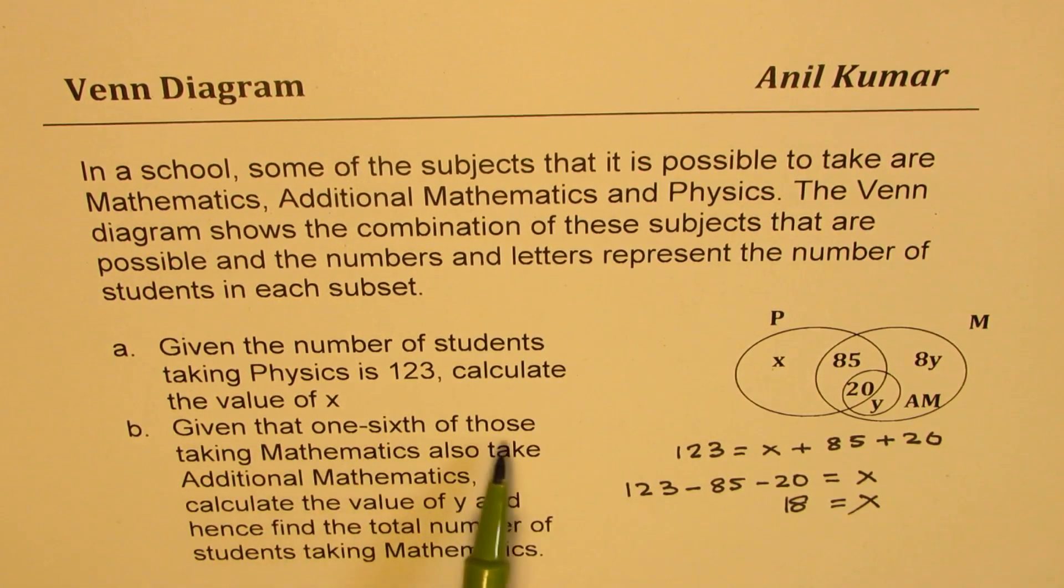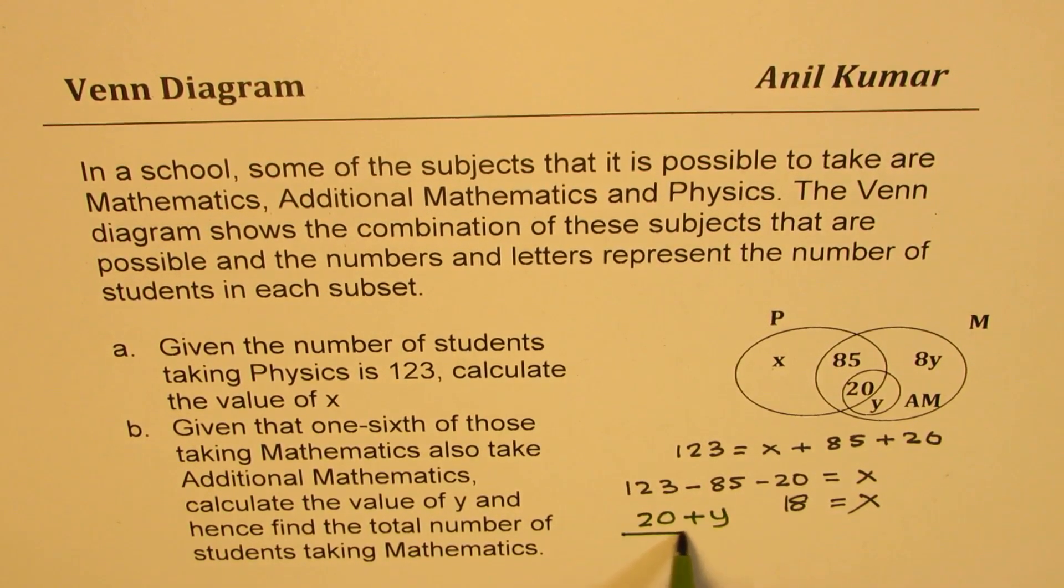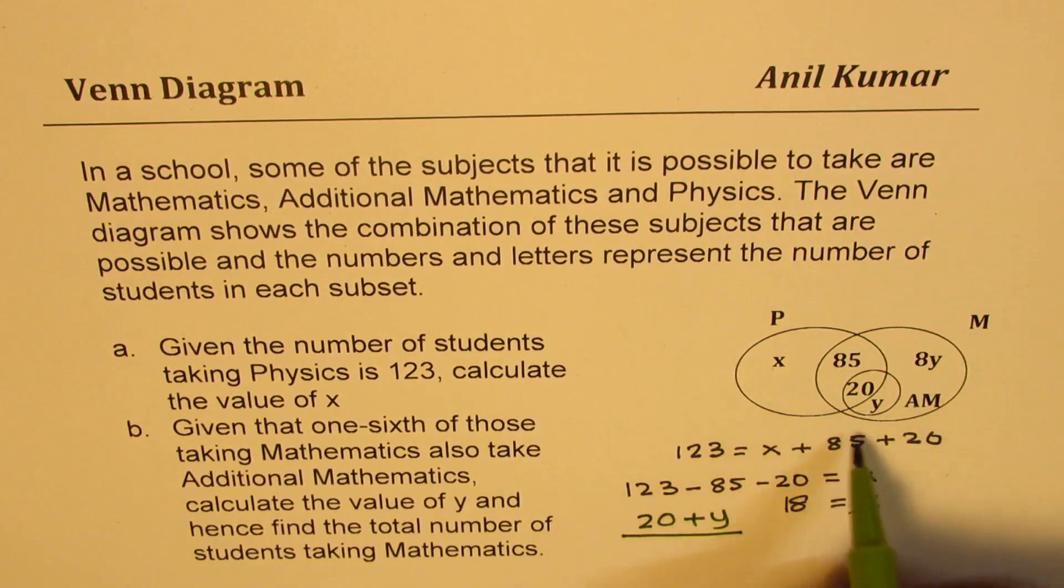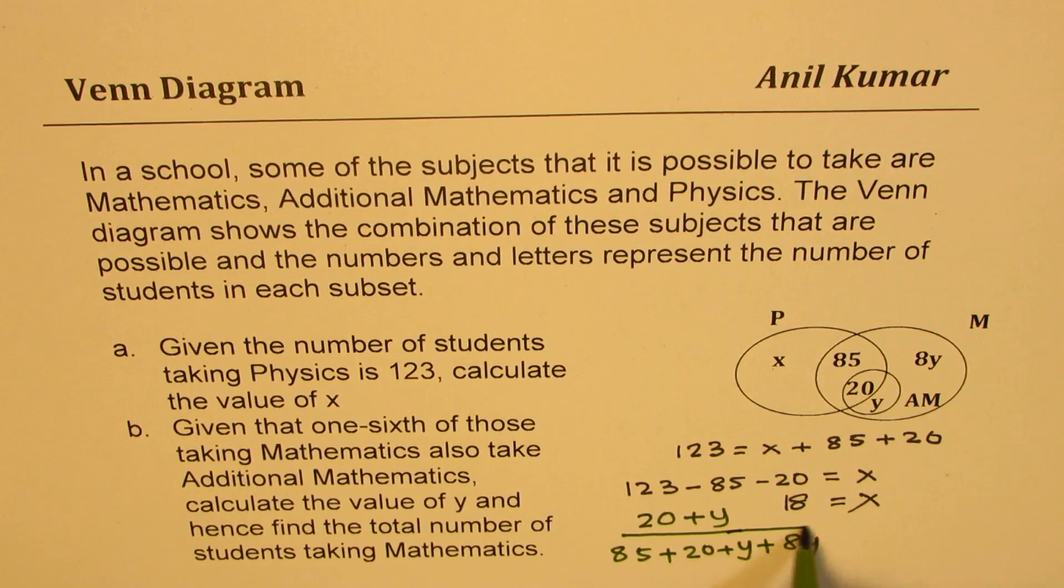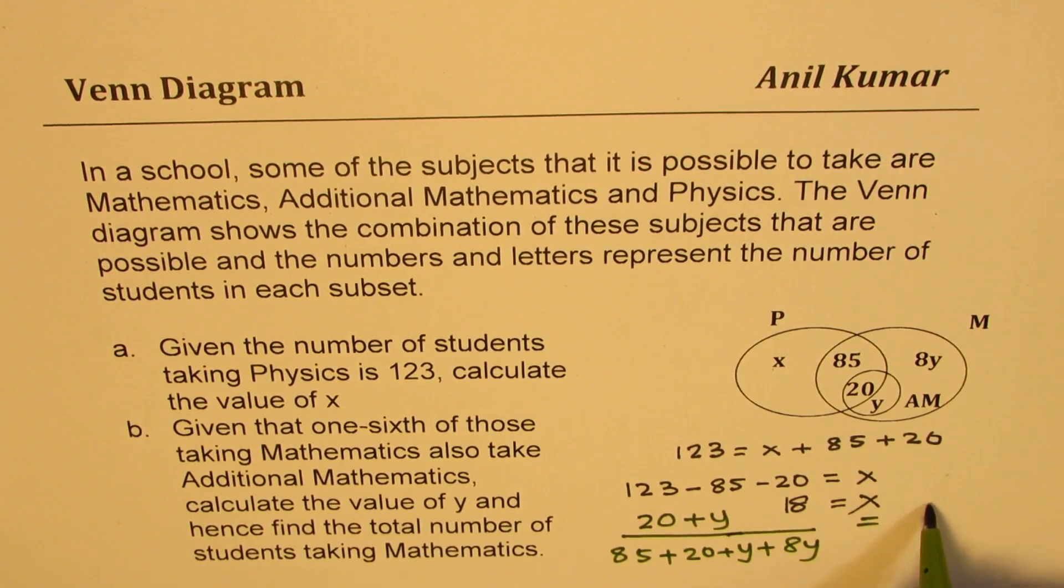Given that one sixth of those taking mathematics, everybody has taken mathematics, one sixth have taken additional mathematics. So that means the ratio 20 plus y over all of them. All of them means 85 plus 20 plus y plus 8y, correct? All of them. So this ratio is one sixth. You get the idea.